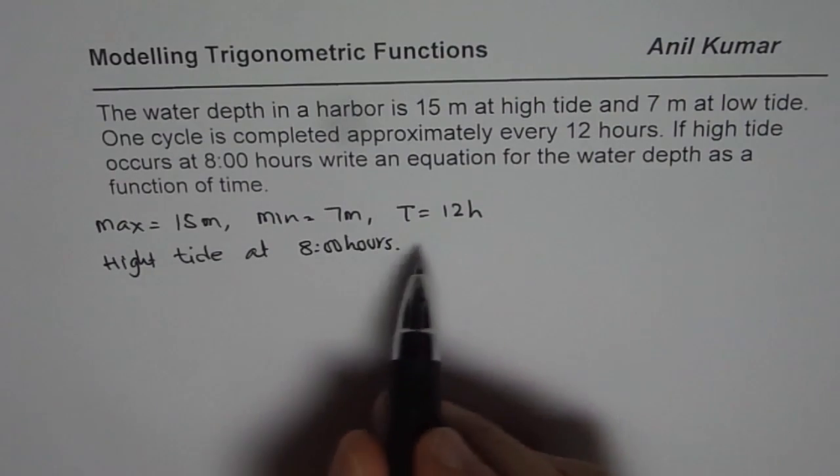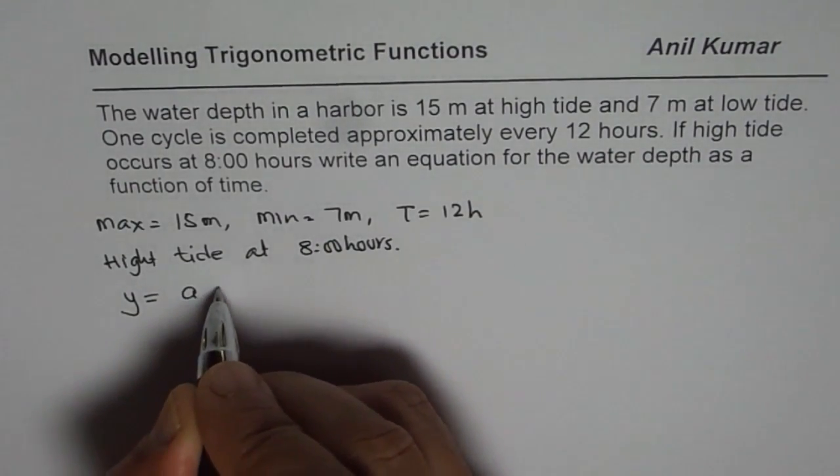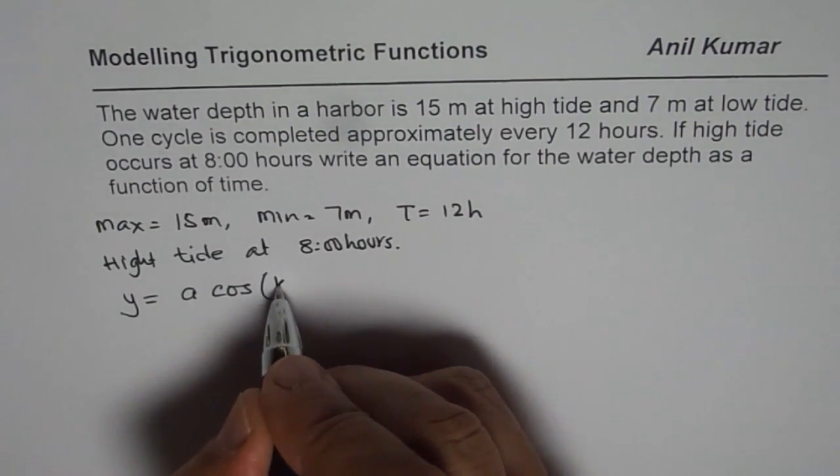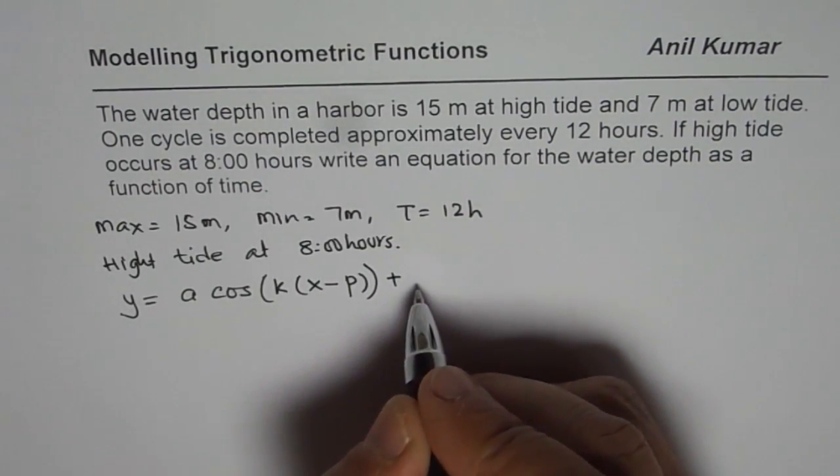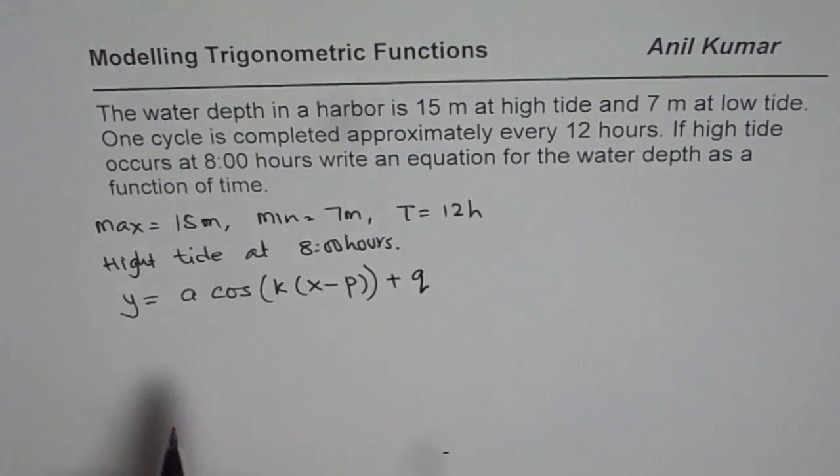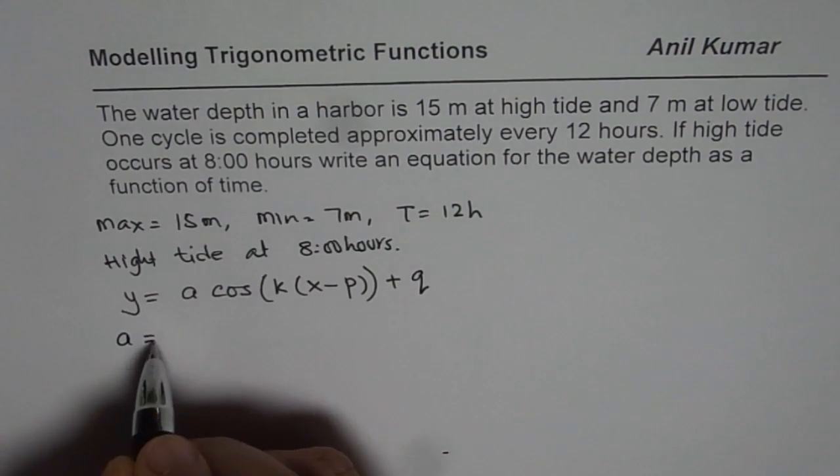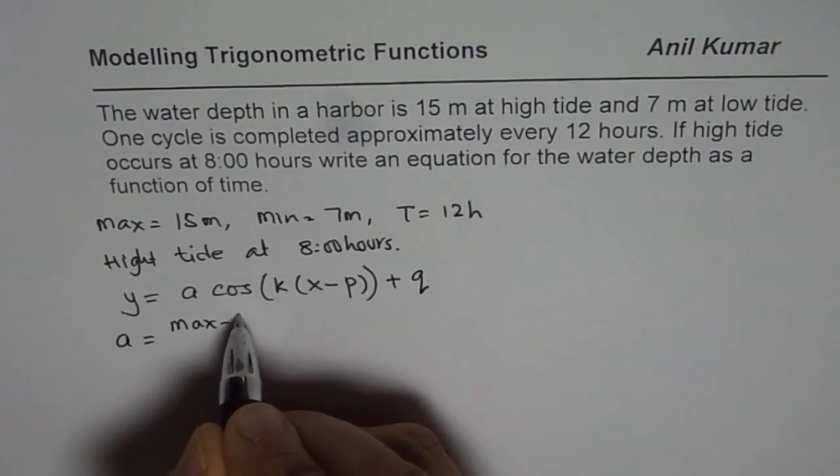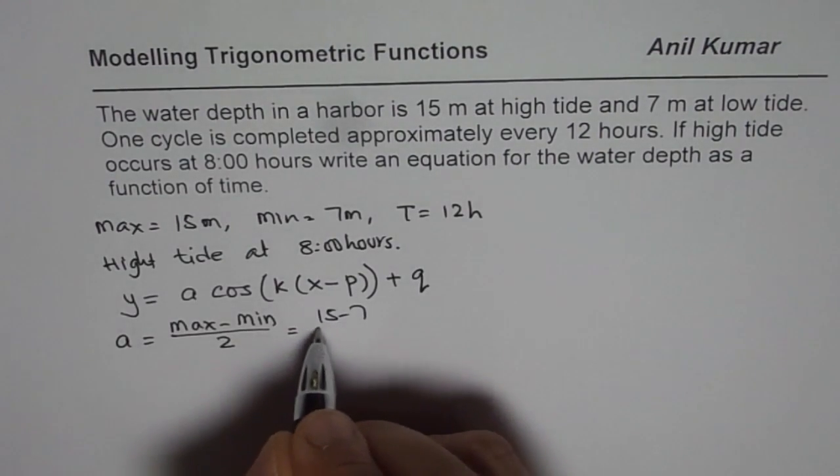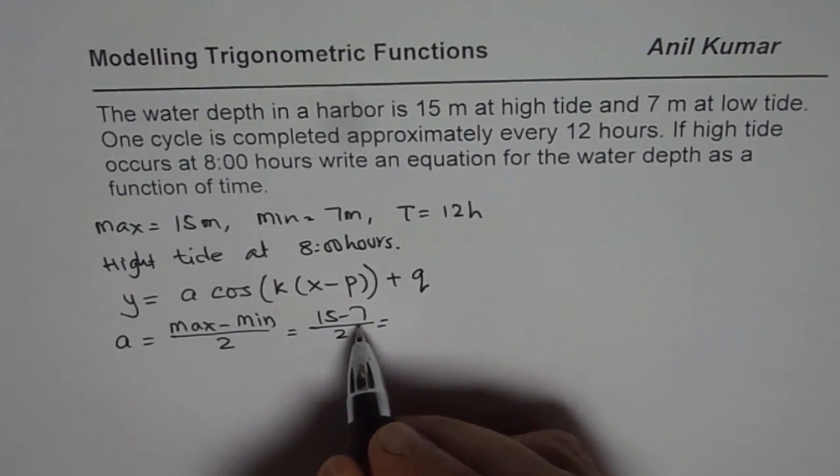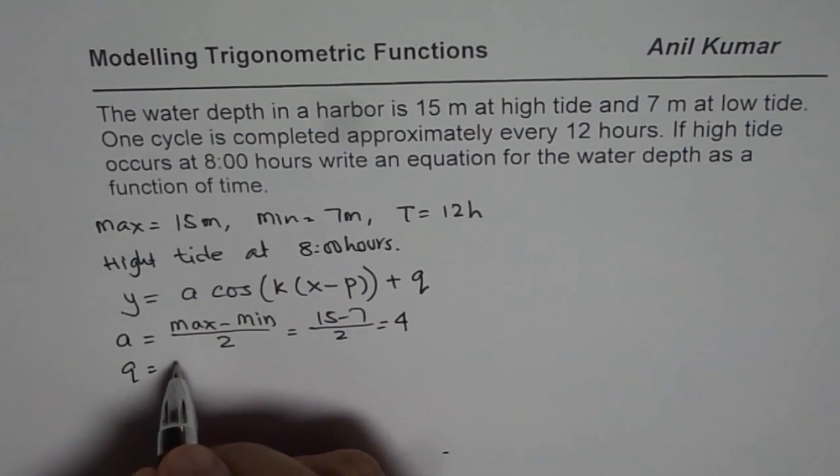From here we can very easily get the equation. Let us say the general equation we want to write is y equals to A times cos of k times x minus phase shift plus the axis, let us call this as q. The amplitude is difference of maximum and minimum divided by 2, which in this case will be 15 minus 7 divided by 2. 15 minus 7 is 8 and 8 divided by 2 is 4.